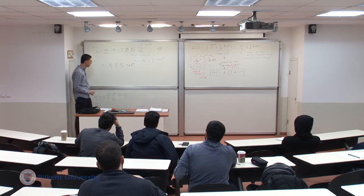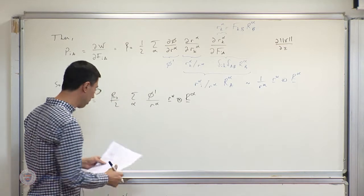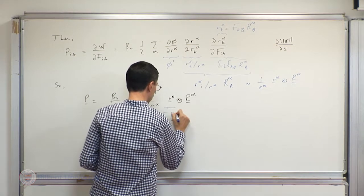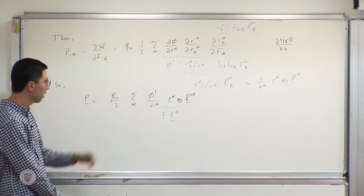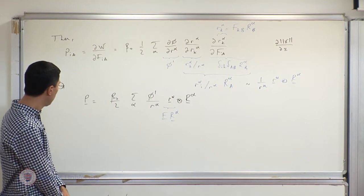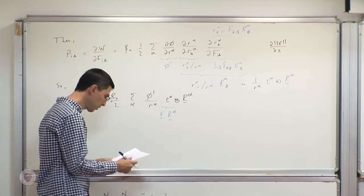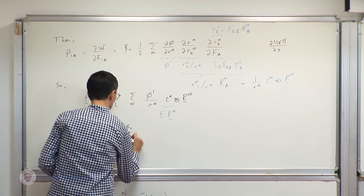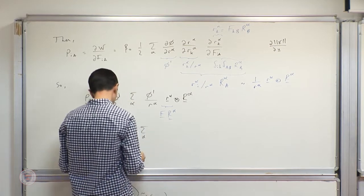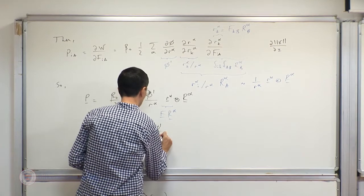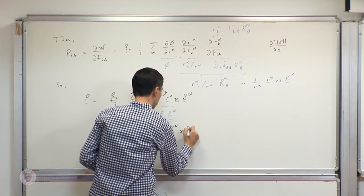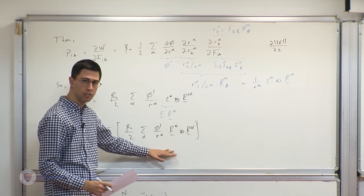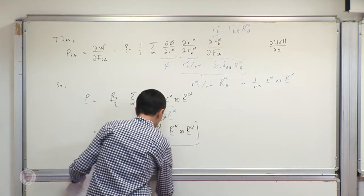Now that we have the expression for the first Piola-Kirchhoff stress tensor, we can derive the other stress tensors. Invoking the Cauchy-Born hypothesis, we can take F outside of the tensor product and write P as F multiplying beta-naught over 2 times the sum over alpha of phi-prime over r_alpha times capital R_alpha tensor capital R_alpha. Since P equals F times S, whatever is in those brackets must equal S.